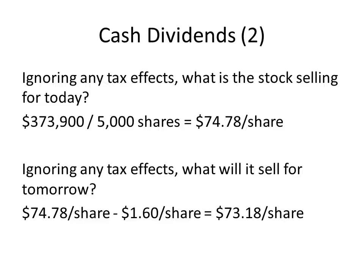Ex-dividend means without dividend. The question tells us to ignore any tax effects. The stock is selling for $373,900 divided by 5,000, which gives us $74.78 per share today. Tomorrow the stock will be selling ex-dividend, meaning without dividend. That dividend of $1.60 comes straight out of the value of the share, so tomorrow the shares will be selling for $1.60 less, or $73.18 per share.